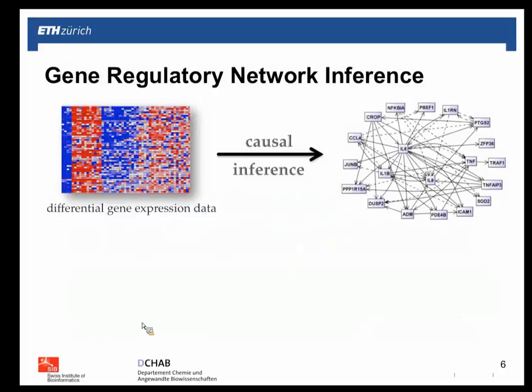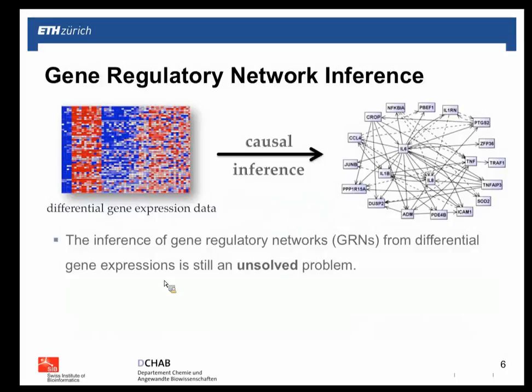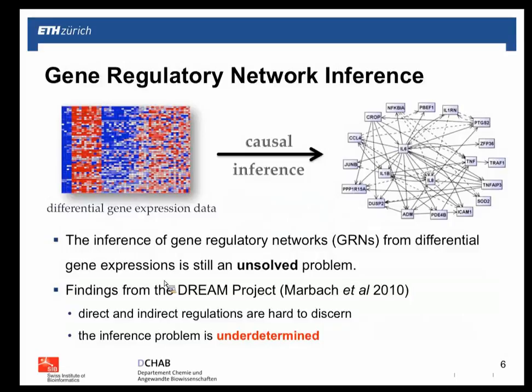The inference of gene regulatory networks from expression profiles remains an unsolved problem. DREAM challenges have shown that differentiating direct versus indirect regulation is quite challenging. If you knock out gene A, under steady-state conditions, perturbation of A leads to differential expression not just in genes B and D directly regulated by A, but also in all downstream genes — both directly and indirectly regulated by A.